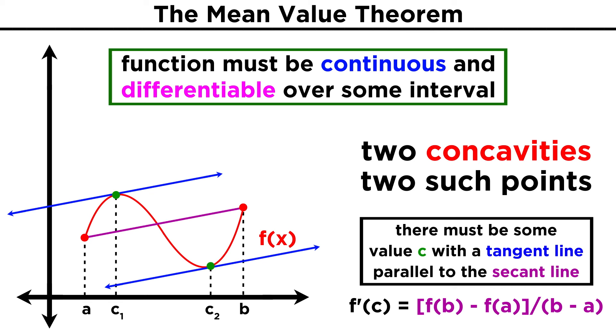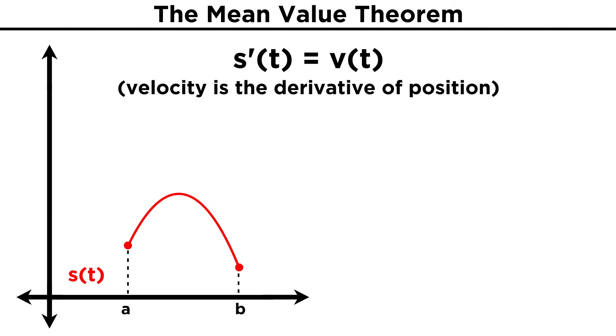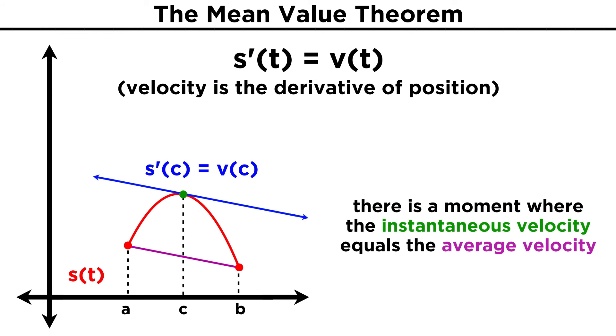This truth has various applications. If the function was a position function, then the derivative would be its velocity, and the theorem would imply that there must be at least one instant over this interval where the instantaneous velocity given by the derivative at that point, or the slope of the tangent line at that point, must be equal to the average velocity given by the slope of the secant line.